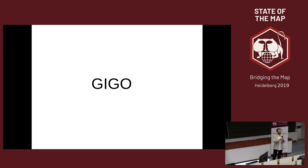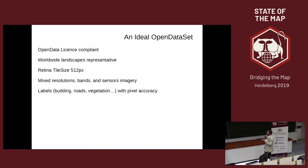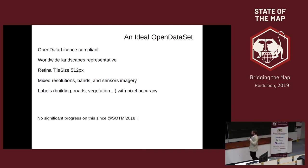What could be an ideal open dataset? It will be open data compliant, convey a lot of landscape from worldwide, be big resolution tiles, and include mixed bands, resolution, and sensor imagery. And obviously convey several kinds of features — buildings, roads, vegetation, and so on — with pixel accuracy. I insist on that: if you have a line related to a road, it's not enough. We must have the surface of the road to be able to perform well with this kind of approach.